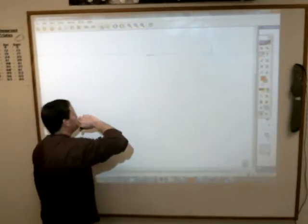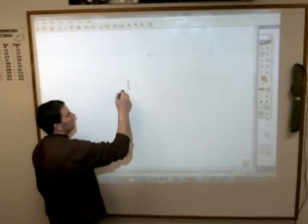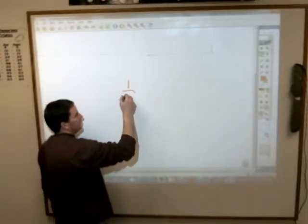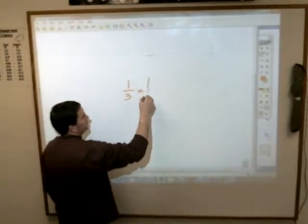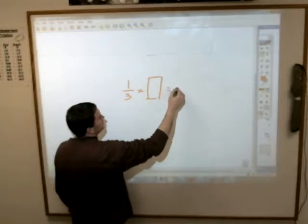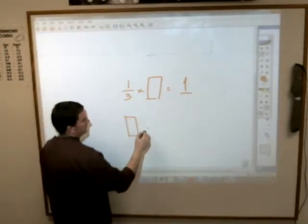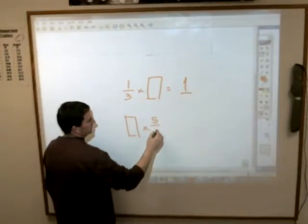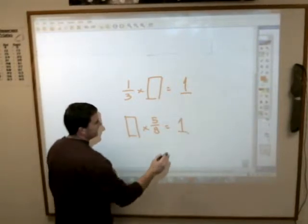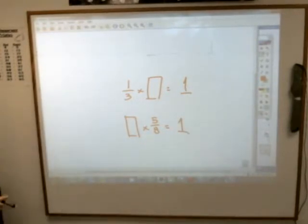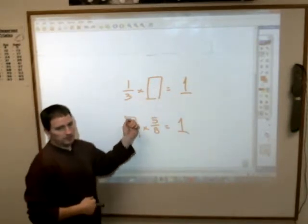So the book will throw this at you, trying to get you to think a little bit. They'll go 1 3rd times, and then they'll put a big box here, equals 1. Or maybe they'll go a big box times 5 8ths equals 1. Anytime you see something that looks like that, as long as it's multiplication, you automatically know what numbers, what goes here and what goes there.